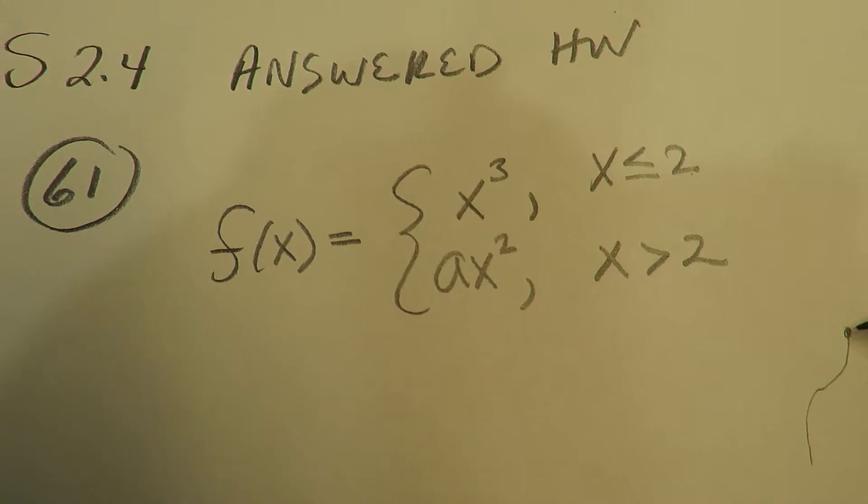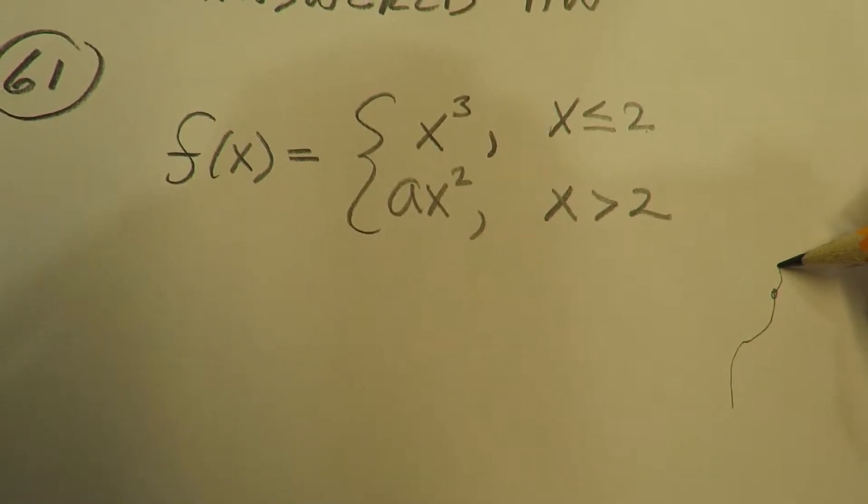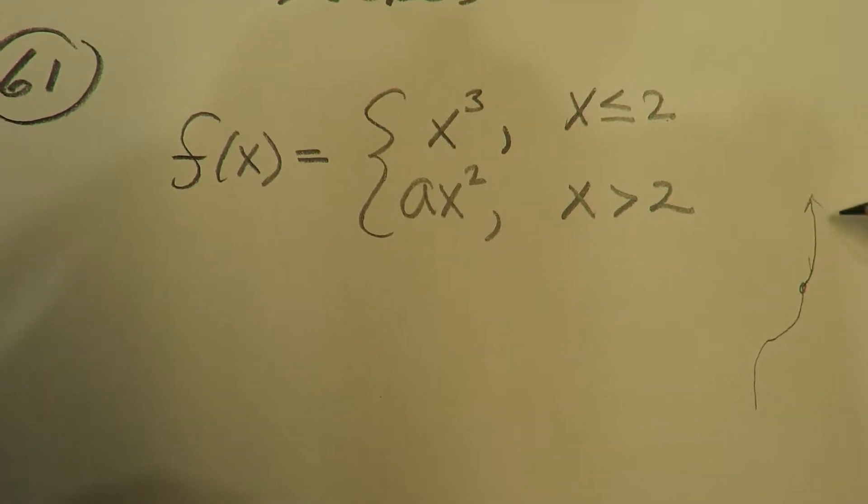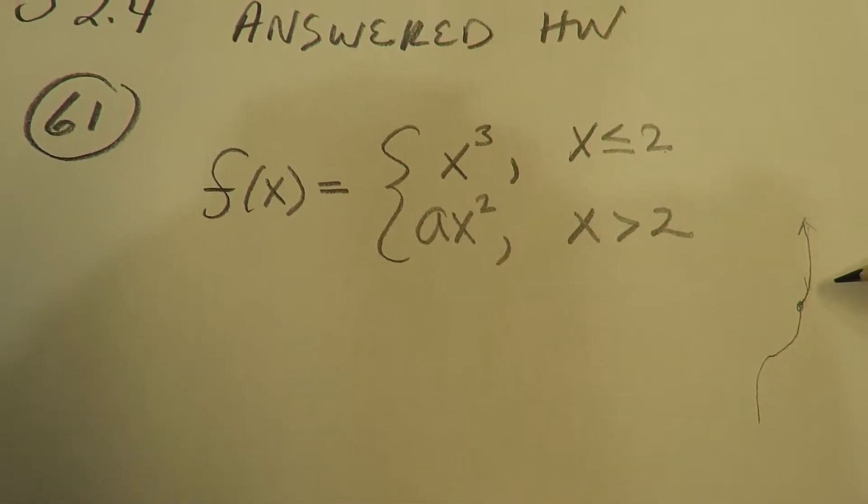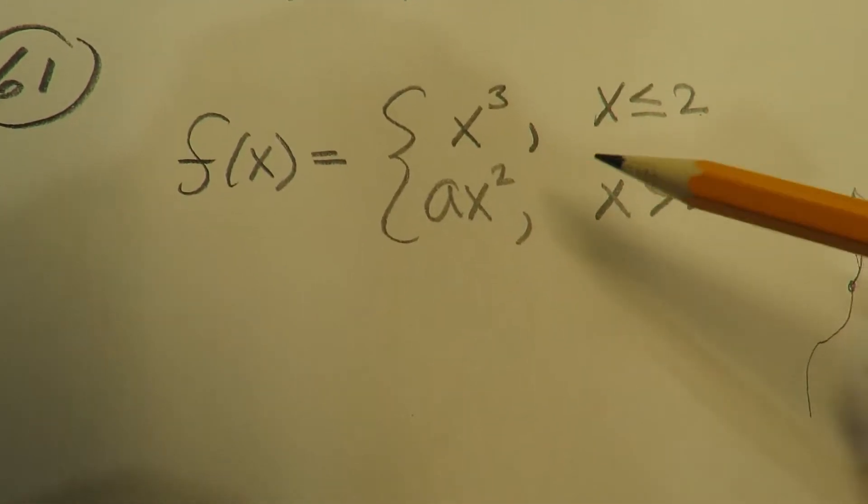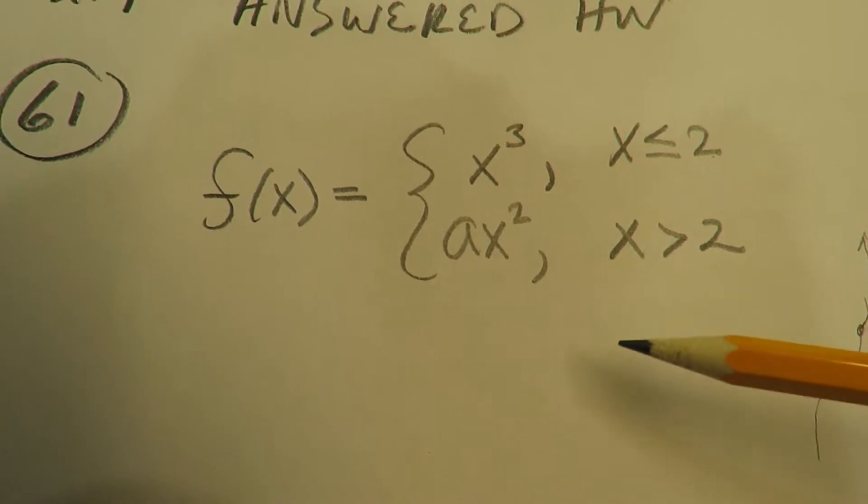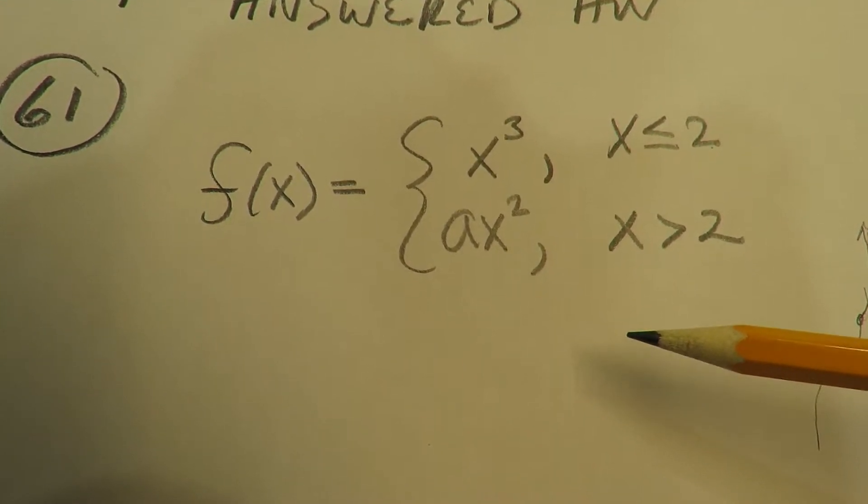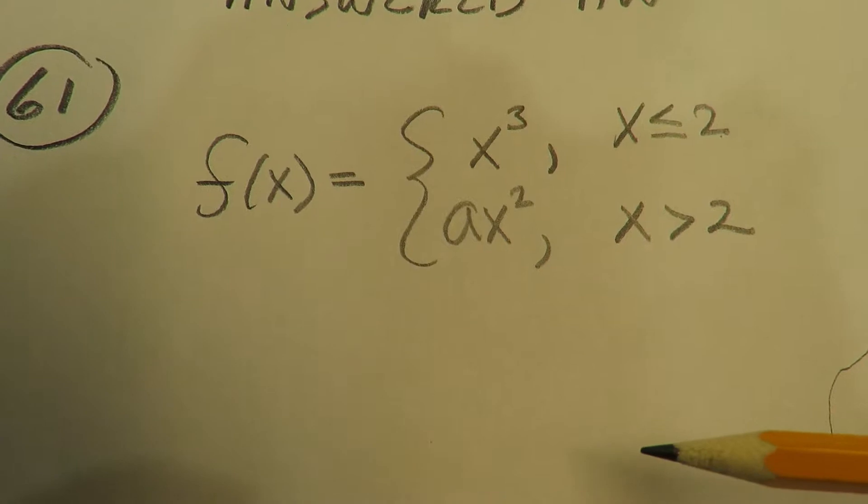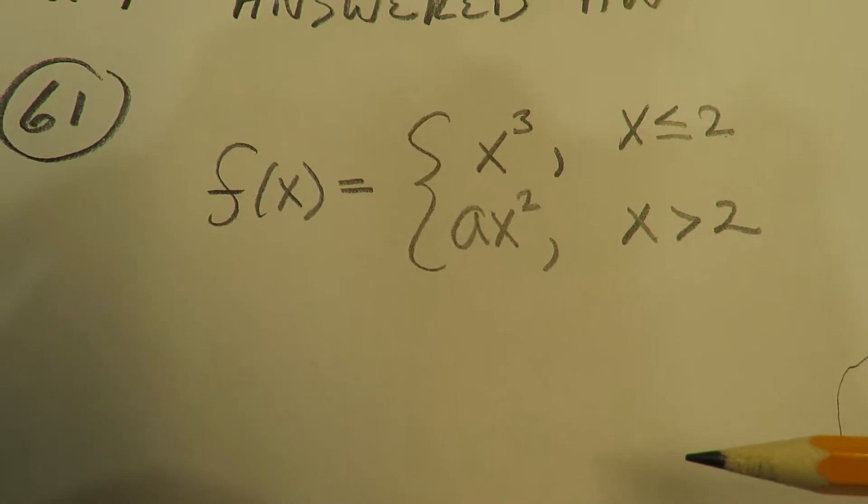So you want to make sure that this snaps together as you add the parabola as you get greater than 2. Remember the three conditions for continuity: the point must exist, the two-sided limit must exist, and then the limit and the point must all connect.